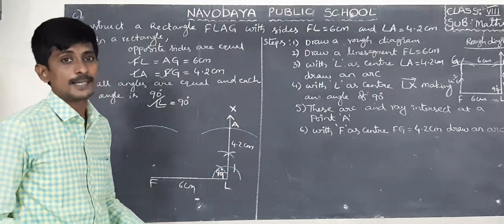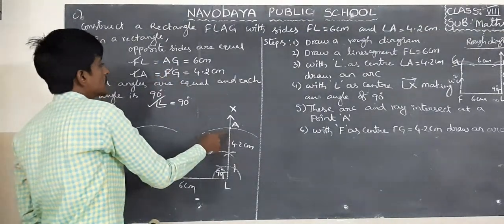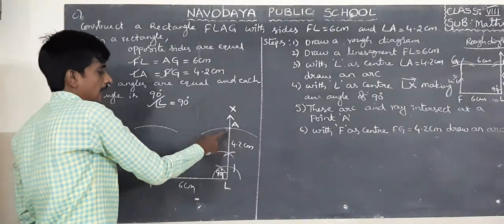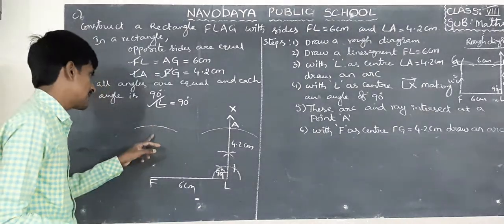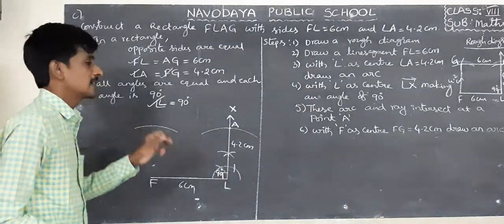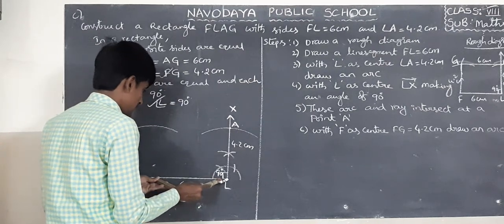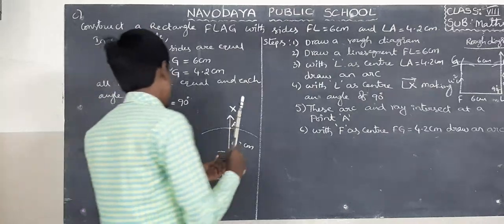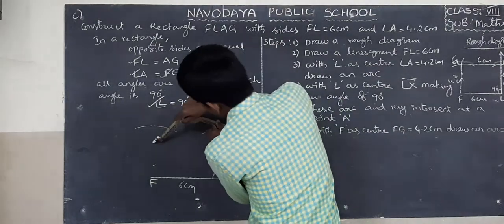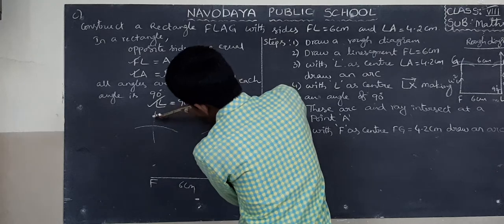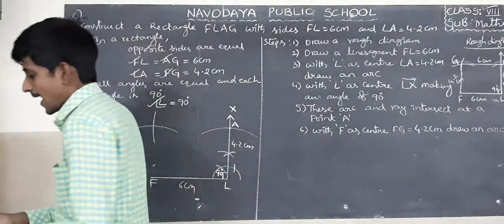With A as center, AG equals to 6 centimeters, draw an arc. These two arcs intersect at point G.